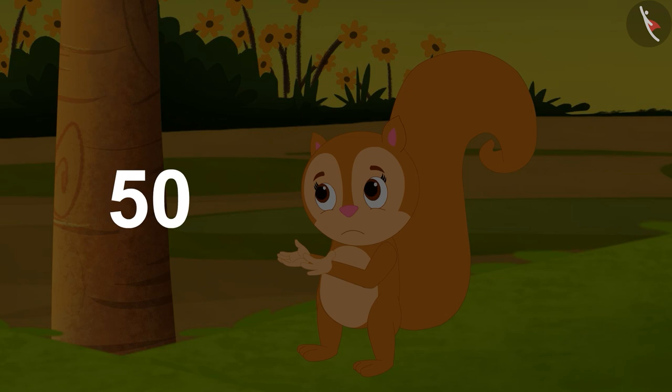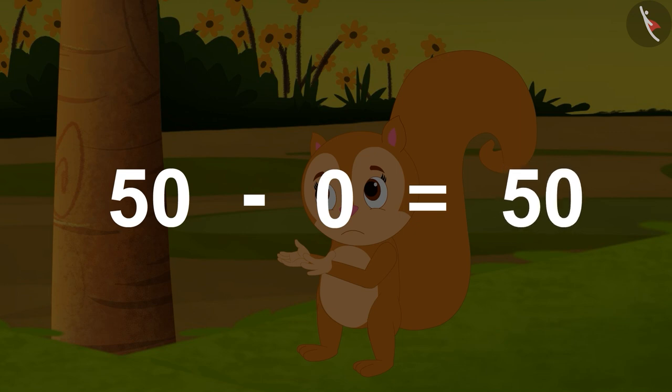When we subtract zero from a number, the answer is the same as the number subtracted from. For example, 50 minus zero is equal to 50.